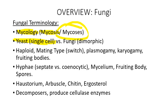Fungi are what are called dimorphic. Dimorphic means two forms — 'di' means two, 'morphic' means form or shape. In the context of fungi, dimorphic means that fungi exist as single cells at high temperatures like 37 degrees, and they exist as colonies at low temperatures like 20 degrees or room temperature.